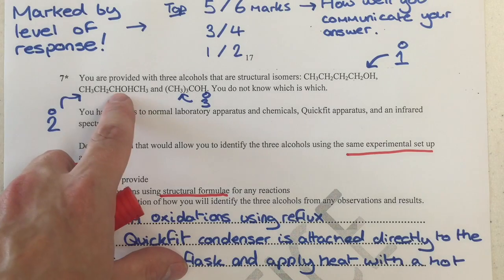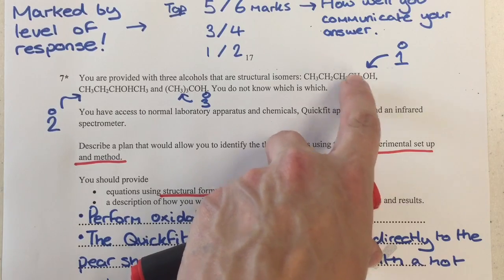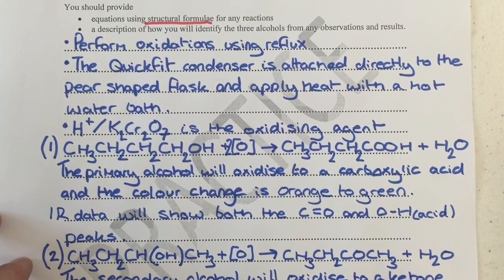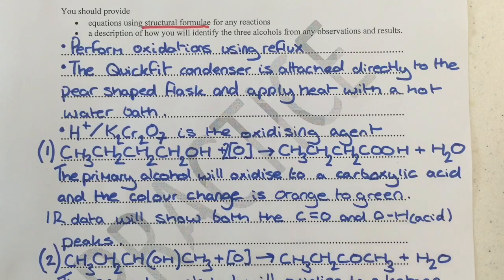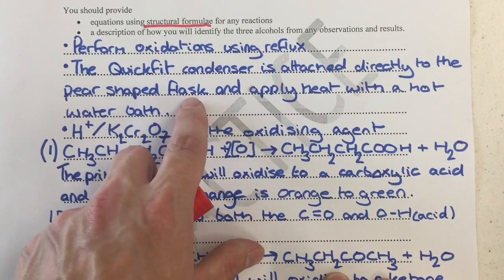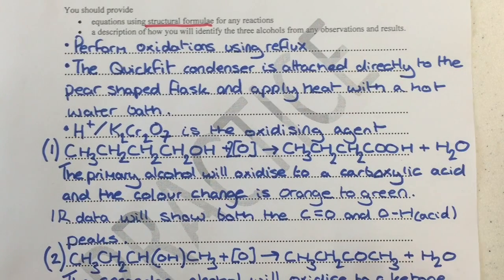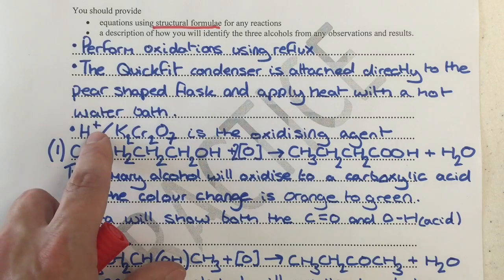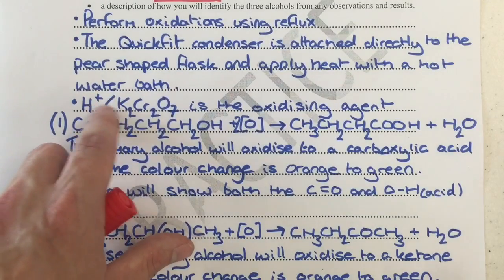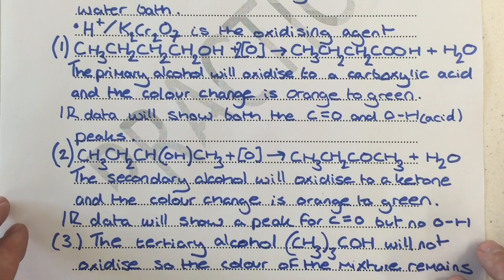However, if we reflux, the secondary alcohol will still form a ketone, but the primary alcohol will form a carboxylic acid — a completely different functional group. So I'm definitely using a reflux. The quick-fit condenser is attached directly to the pear-shaped or round-bottom flask, and I'm going to apply heat with a hot water bath, not a Bunsen burner, because we have lots of flammable reagents. The oxidizing agent is acidified potassium dichromate.